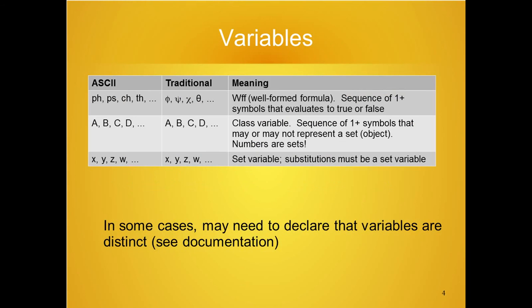A key aspect in formulas is variables, because variables can be replaced by other things. Phi, psi, chi, and theta represent well-formed formulas — sequences of one or more symbols that evaluate to true or false. Capital A, B, C, D and so on are class variables: sequences of one or more symbols that may or may not represent a set, and particular numbers are sets. Lowercase x, y, z, or w are set variables, and these can only be substituted with other set variables. In some cases, you may need to declare that variables are distinct.